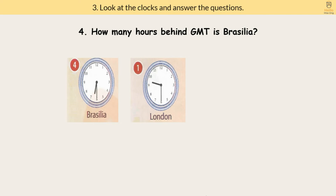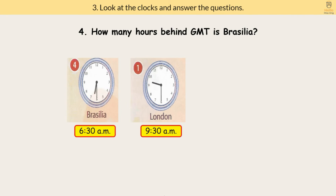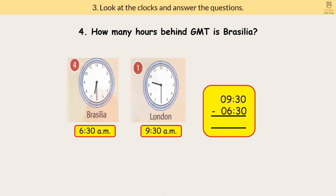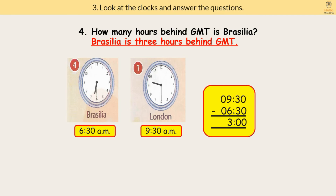Question 4: How many hours behind GMT is Brasilia? We know that Brasilia is behind GMT, meaning the time is earlier than London. If the time in London is 9:30 a.m., the time in Brasilia should be earlier — which is 6:30 a.m. So we minus 9:30 a.m. from 6:30 a.m., and we get 3 hours. Brasilia is 3 hours behind GMT.